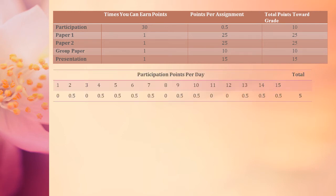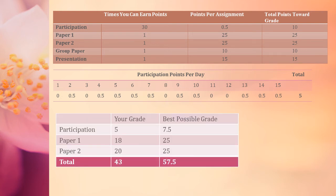So the first thing we need to do is figure out how many participation points we've earned. There have been 15 days of class and we've earned a total of 5 points so far. Our best possible participation grade at this point would be 7.5, because 15 times 0.5 equals 7.5. Along with the grades earned on the first two papers, we have 43 out of 57.5 points, giving us a current grade of 74.8%.